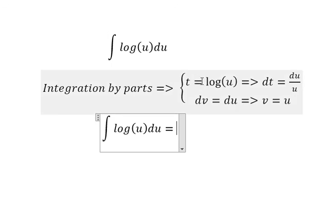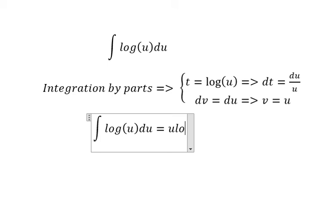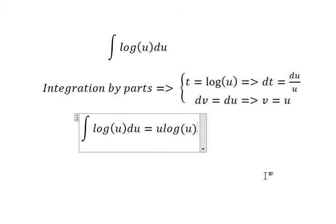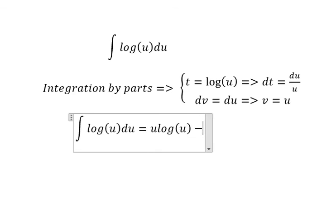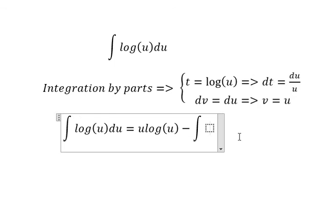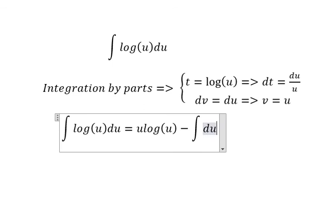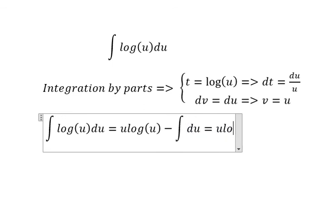t multiplied with v, so we got u multiplied with logarithm of u minus the integral of du over u multiplied with u. So we can write the answer.